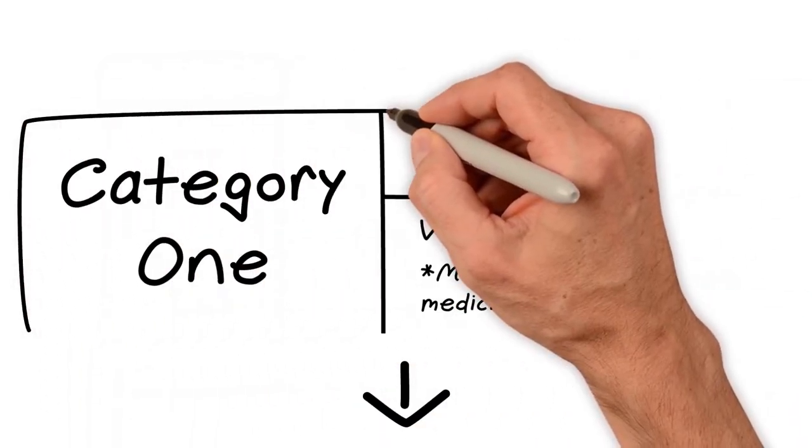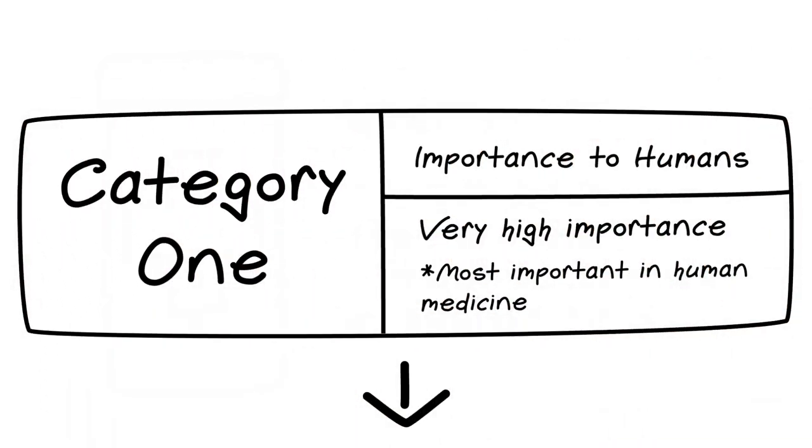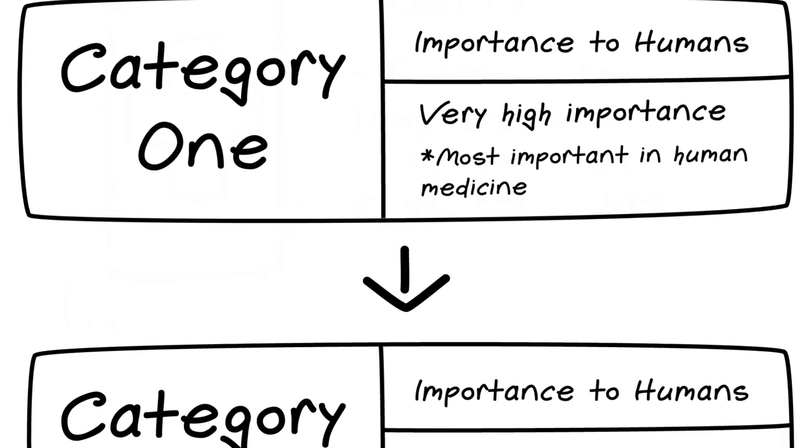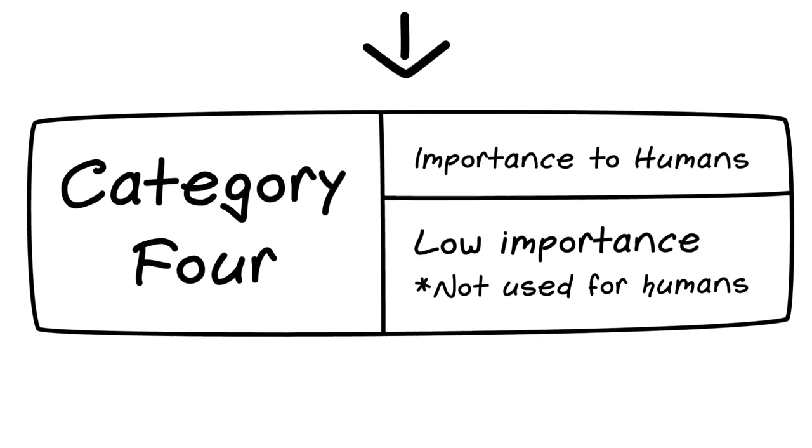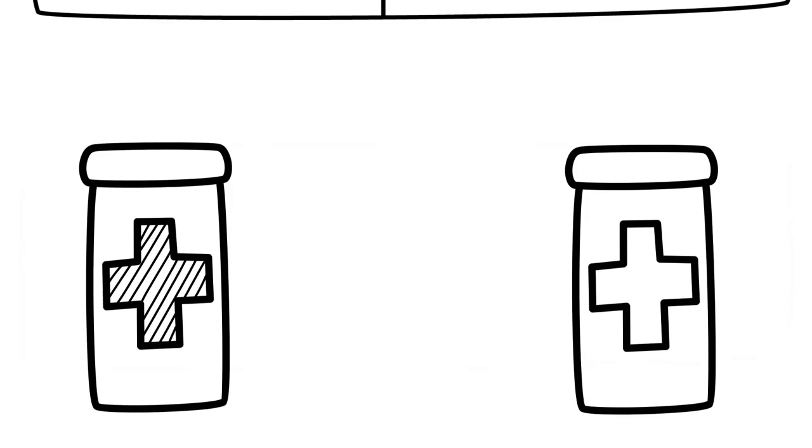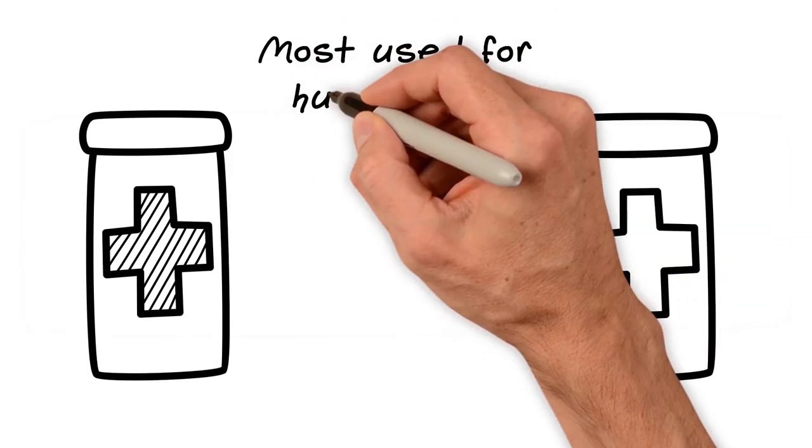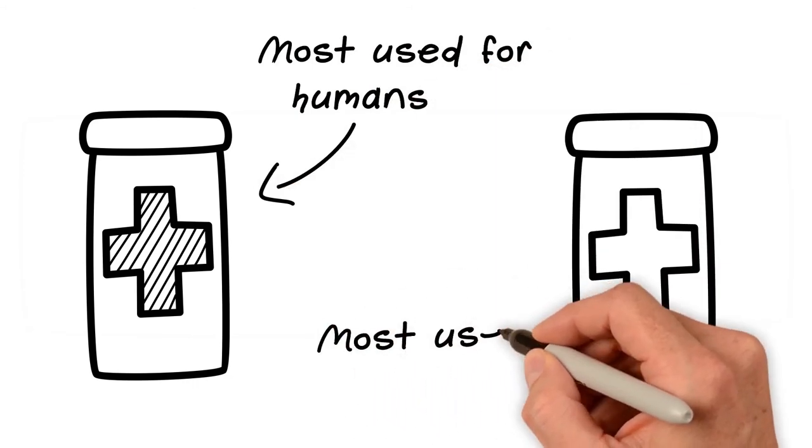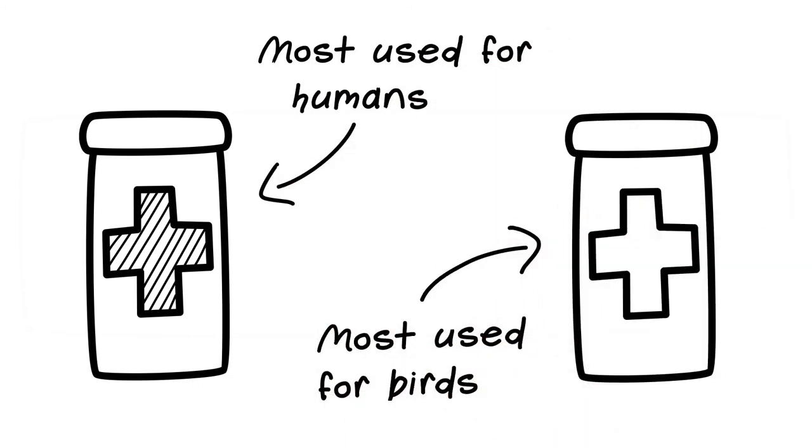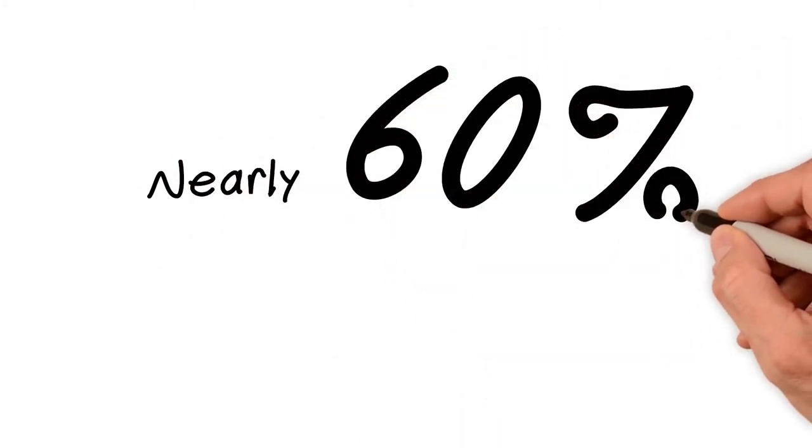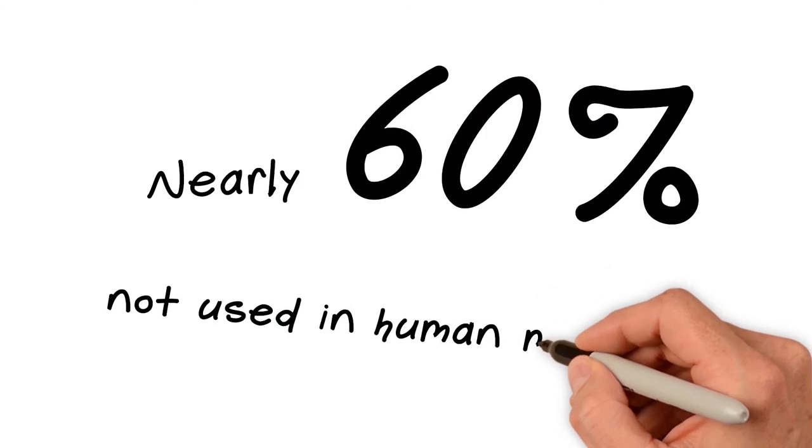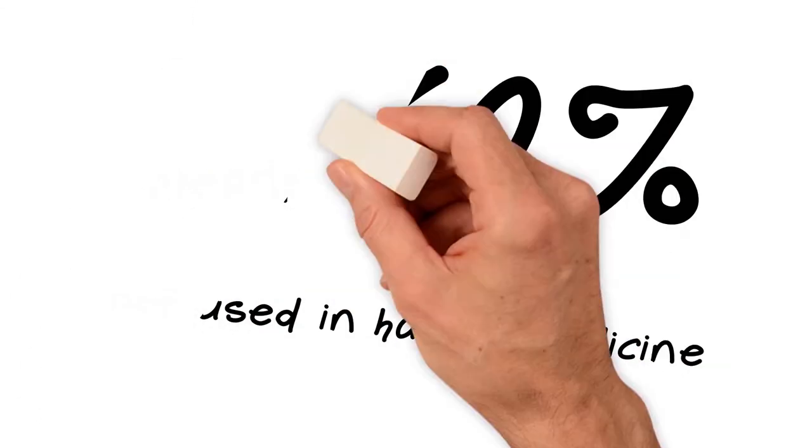They come in categories, from Category 1, which are the most important antibiotics in human medicine, to Category 4, which aren't even used by humans. The antibiotics used most often in humans are not the same ones used most often in chicken production. In fact, nearly 60% of all the antibiotics used in chicken production are not used in human medicine. And farmers are working to reduce overall use.